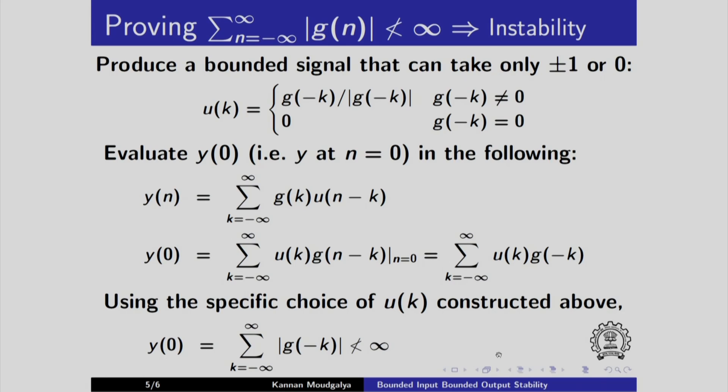So, we have produced a particular input, a bounded input which takes only plus minus 1 or 0 that makes the output unbounded. So, we have shown this side also.